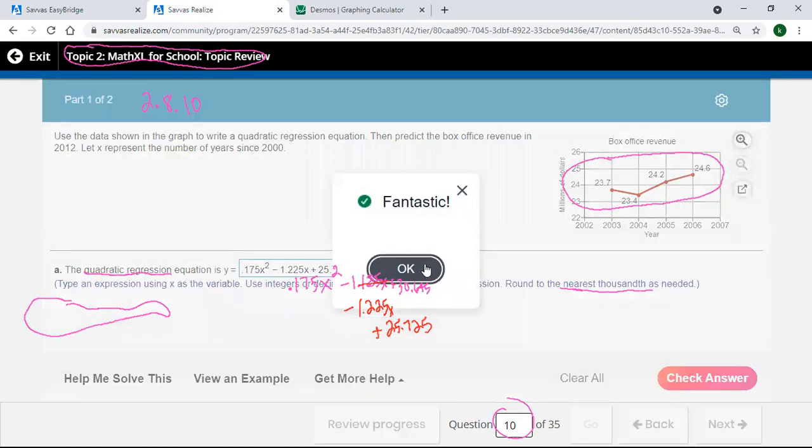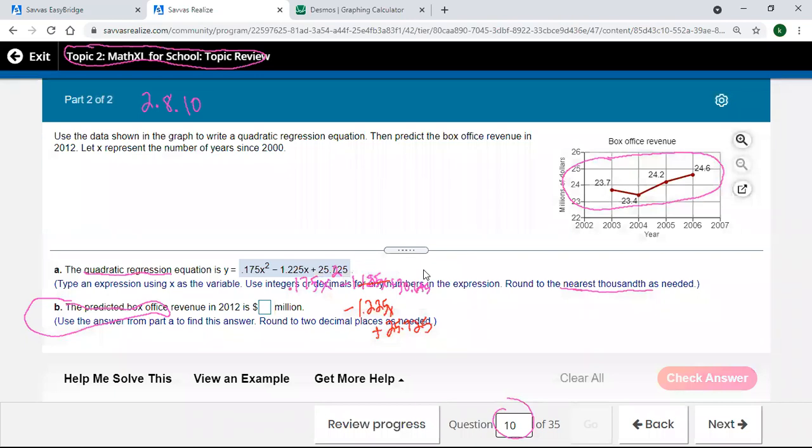Let's check that one. Okay, so now that's part one. What's it say for part two? So it says, what's the predicted box office revenue for 2012? Remember I was using 1, 2, and 3 or 3, 4, 5, and 6 for those years, so I just need to put a 12 into this formula.